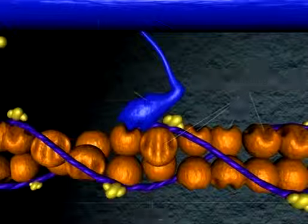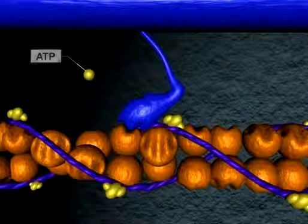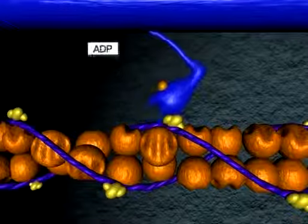Release of the myosin cross bridge from actin requires binding of ATP. After ATP binds, it is split to ADP and inorganic phosphate.